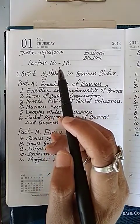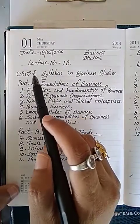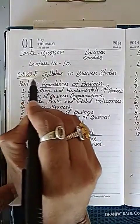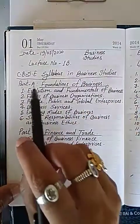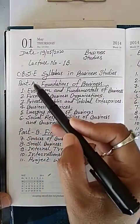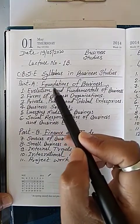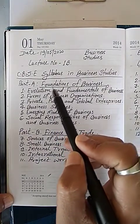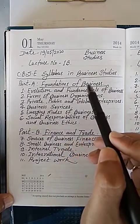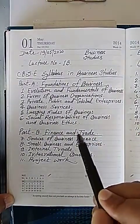First, I will describe about the CVSE syllabus in business study. There are two parts: Part A — fundamentals and foundations of business — and Part B — finance and trade.